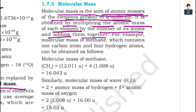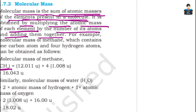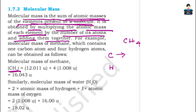Let's look at the example of CH4 — the molecular mass of methane. In methane we have carbon and hydrogen elements. For carbon, we multiply the atomic mass of each element by the number of its atoms. Atomic mass of carbon is 12, and there is 1 carbon atom, so 12 × 1 = 12.